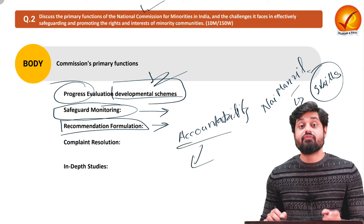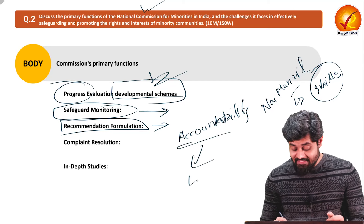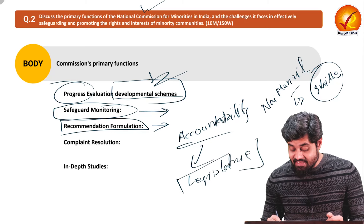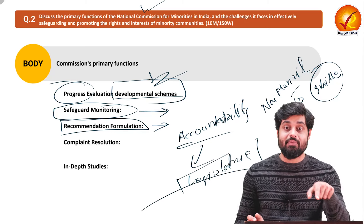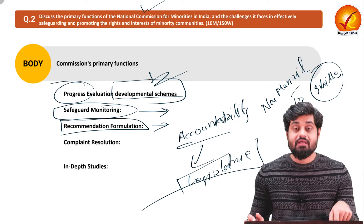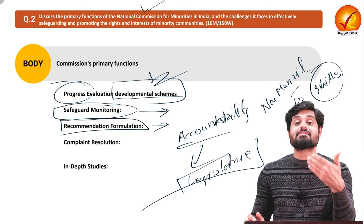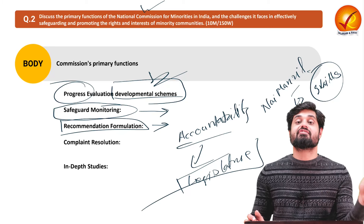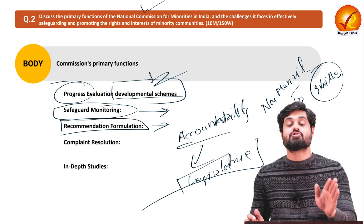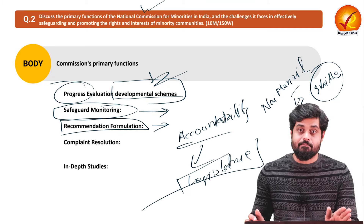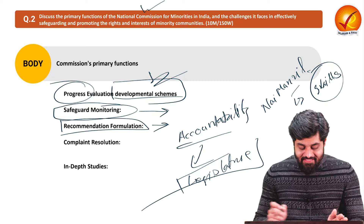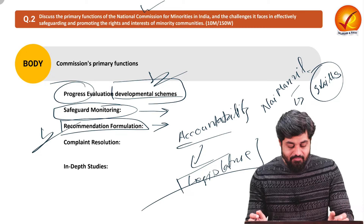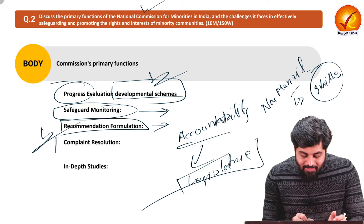These reports and recommendations might be discussed in Parliament — Members of Parliament might ask questions on the basis of these reports regarding the status of minority rights in India, and the government then has to answer. So recommendation formulation ensures accountability of the executive to the legislature. This is an important function of the National Commission for Minorities.